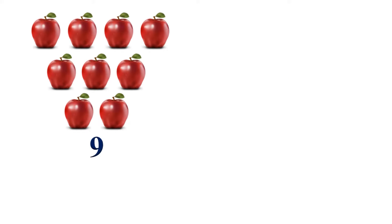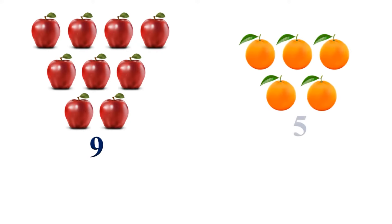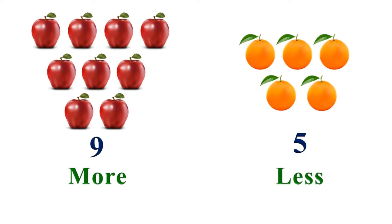Here, on the left-hand side, we have 9 apples, and on the right-hand side, we have 5 oranges. So, which number is small or less? Yes, 9 is more and 5 is less. That means 9 is a big number and 5 is a small number.